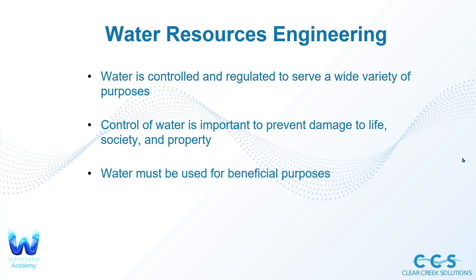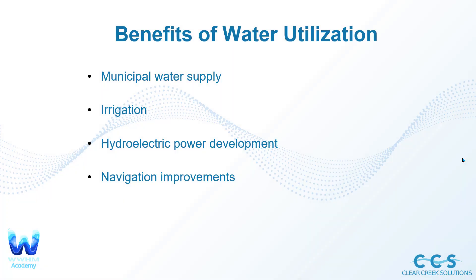Water must be used for several beneficial purposes but also conserved for future generations and managed properly. The benefits of water utilization include: municipal water supply, used anytime you take a shower or wash your hands; irrigation; and hydroelectric power. A lot of hydroelectric power, especially on the West Coast, runs on hydroelectric dams — it's very clean, very efficient, and that's how much of the power grid runs. Water can also be used for navigation improvements when used for shipping along rivers and oceans.